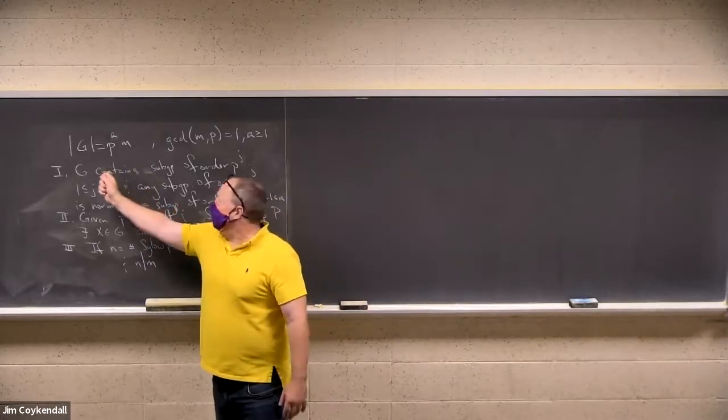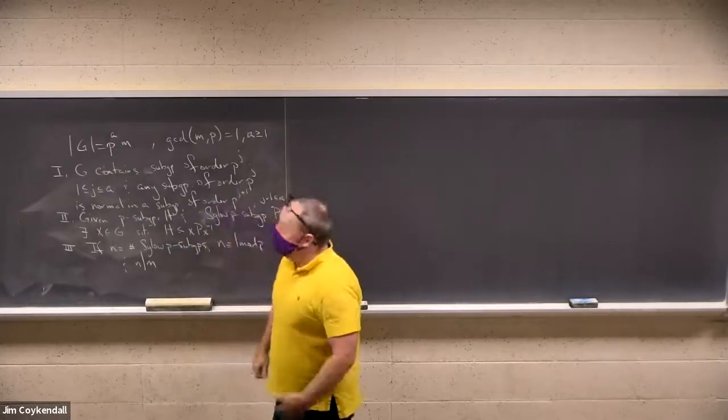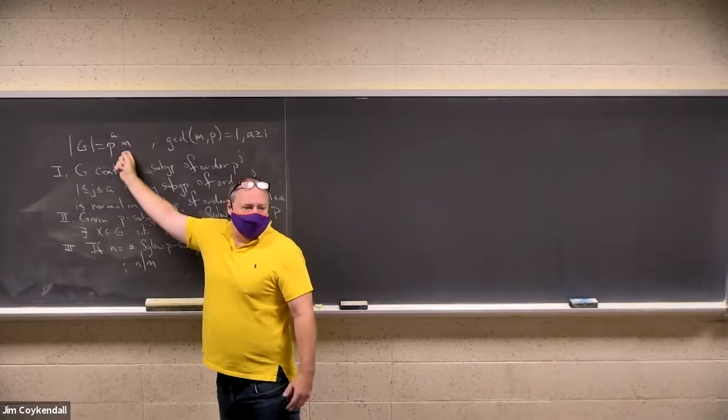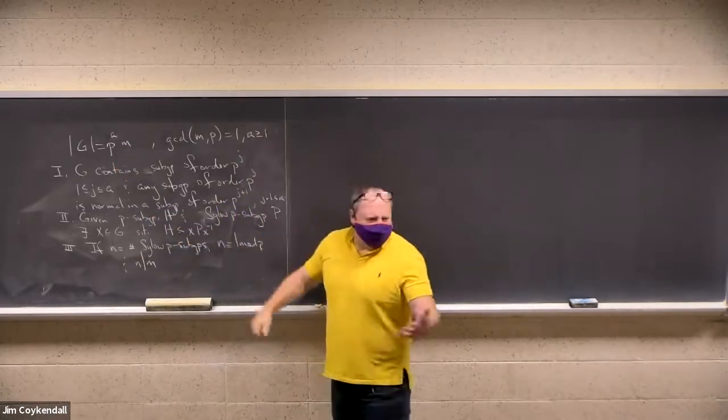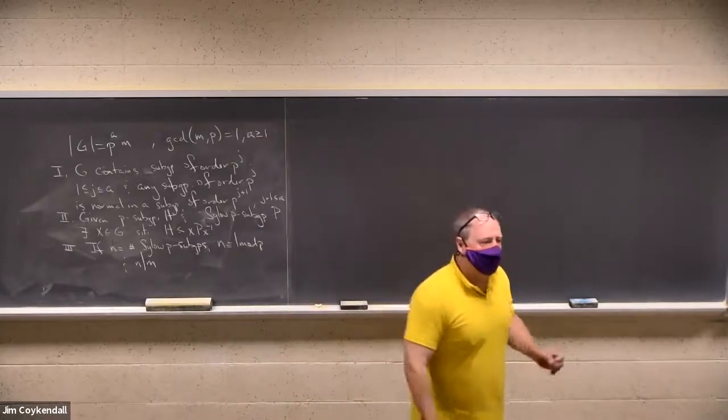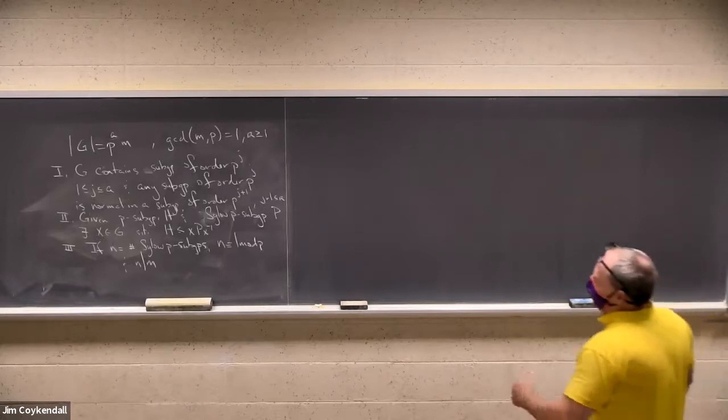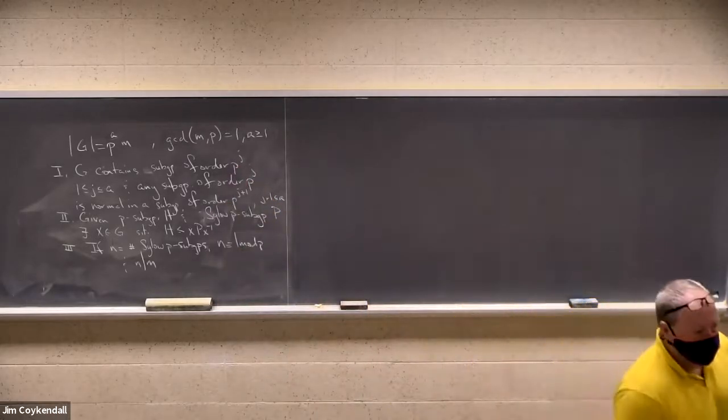The idea is we're dealing with finite groups here. The group is of order P to the A times M, where P is a prime and GCD of P and M is one. What that means is I've sucked out the powers of P out of the order of G. In terms of the prime factorization, A must be at least one. The Sylow theorem says three things. Number one, it's a good generalization of Cauchy's theorem. For every power of P up to and including that biggest power of A, you have a subgroup of order P to the J. And any of these subgroups of order P to the J is normal in a slightly bigger one, as long as J is at least A minus one.